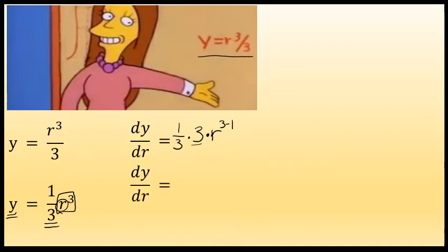This derivative can be simplified somewhat. One third times three is one, so the coefficient of the derivative is one, but I'm not going to write the coefficient of one. And R to the power of three minus one is R to the power of two. So the derivative of Y with respect to R is R squared.